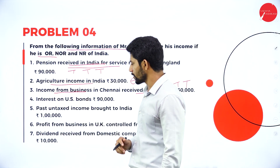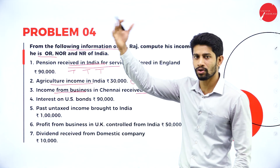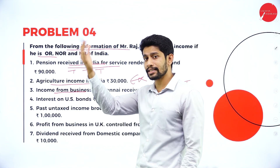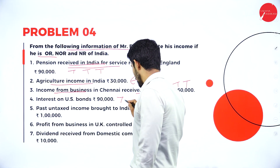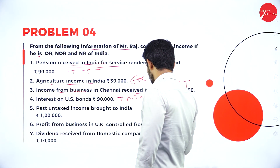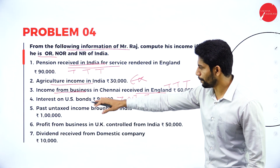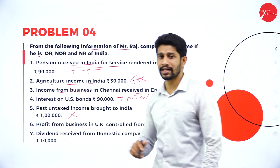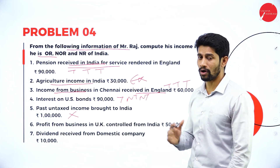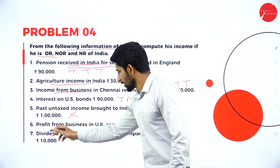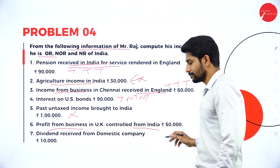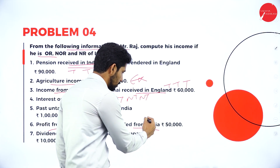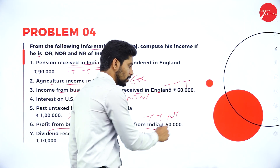Next: interest on US bonds — relating to a foreign income, foreign other than business. Treatment is taxable, not taxable, not taxable. Next: past untaxed income brought to India — not taxable at all, because we tax previous year income only. Next: profit from business in UK controlled from India — foreign business controlled from India, treatment is taxable, taxable, not taxable.